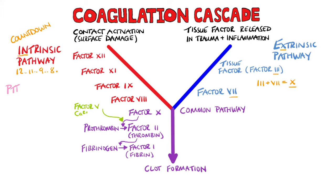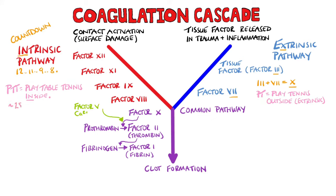As for the lab tests, APTT is the activated partial thromboplastin time, also referred to as PTT, while PT is the prothrombin time. The way to remember which test looks at which pathway is by remembering that you play table tennis inside while you play tennis outside. Both the PTT and PT tests also evaluate the common pathway — factors 10, 5, 2, and 1. The PTT is normally 25 to 29 seconds, while the PT is usually about 12 seconds, but these values change between labs.